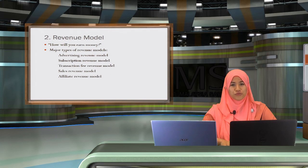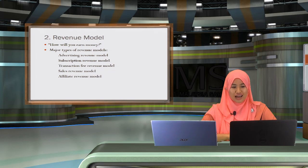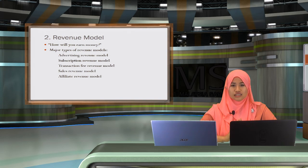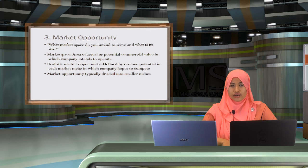The second element is revenue model — how will you earn money? There are major types of revenue models, such as advertising revenue model, subscription revenue model, transaction fee revenue model, sales revenue model, and affiliate revenue model.